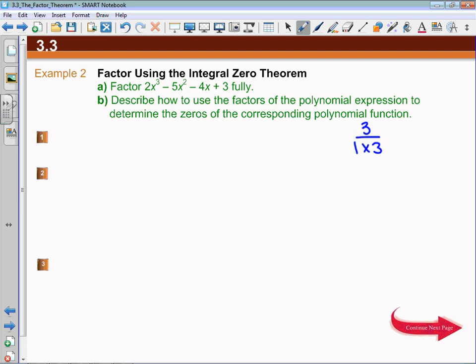That does mean we have to check a few. We're going to check if x plus 1 is a factor, and we do that by evaluating. Let me define that. So I'm going to say that P(x) is equal to what they've given us: 2x³ - 5x² - 4x + 3.